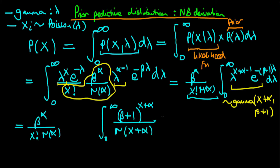But we can't do this for free — we've just introduced this extra normalizing term, which makes the whole integral equal to the integral of a gamma distribution.